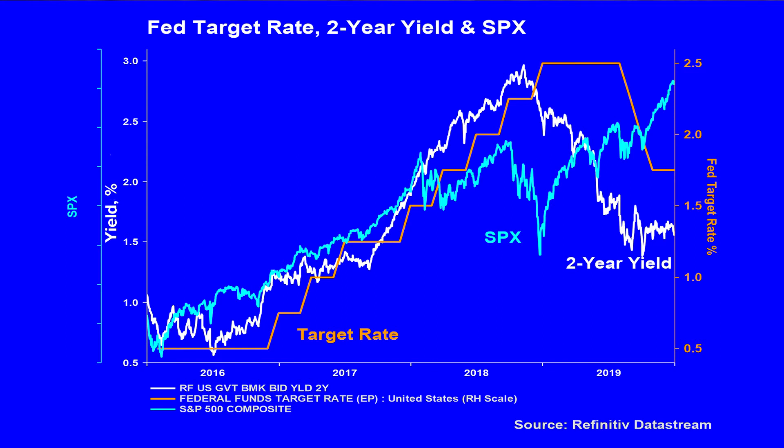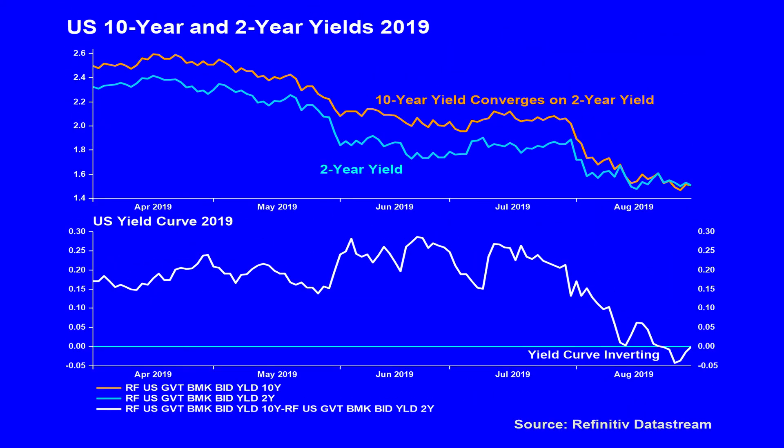By the middle of 2019, the Fed went into reverse. The yield curve, however, continued to flatten in mid-2019 because yields at the long end fell at a faster pace than yields at the front end, so that eventually they converged and led to a brief inversion.